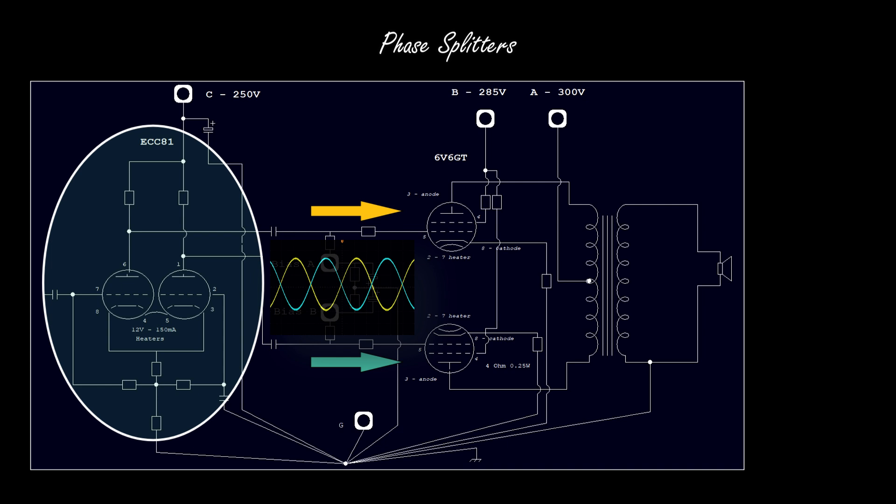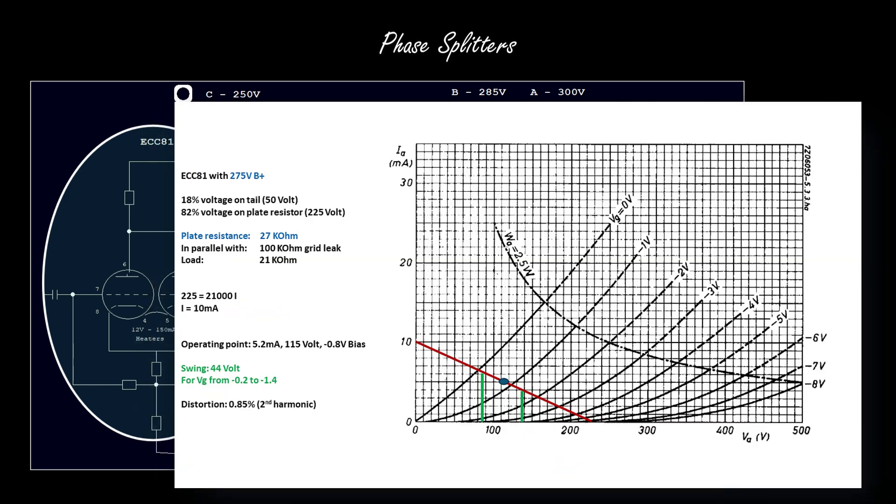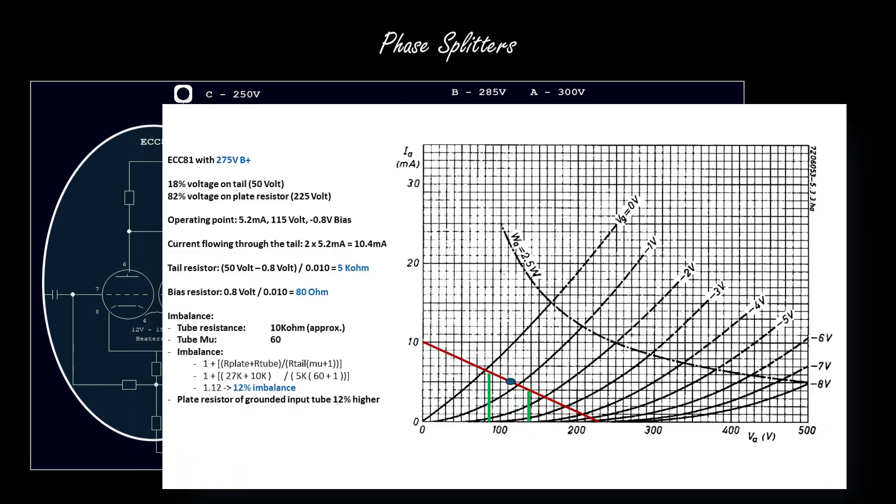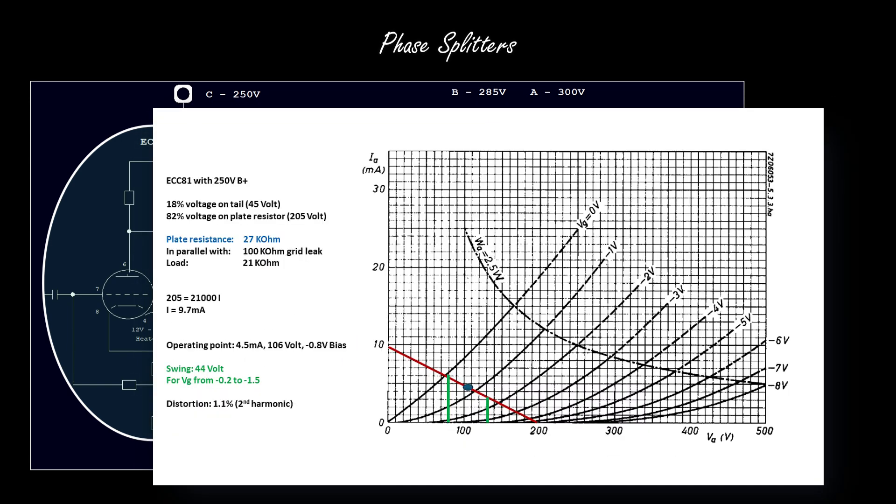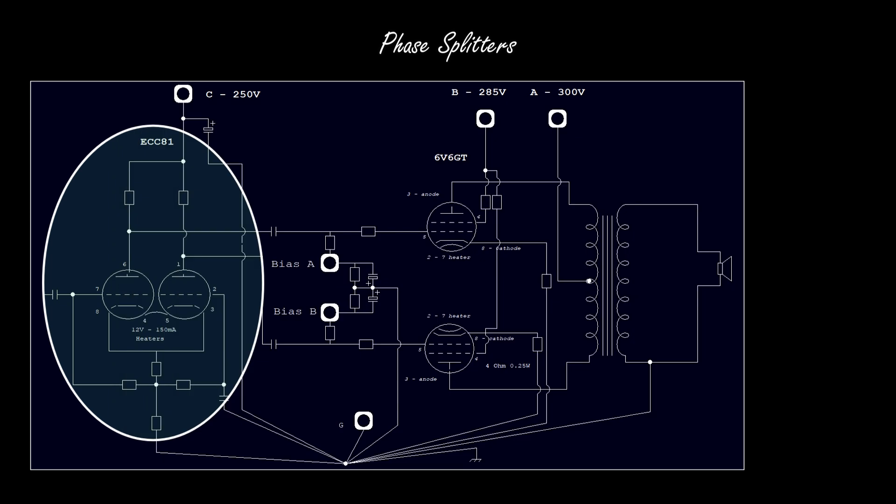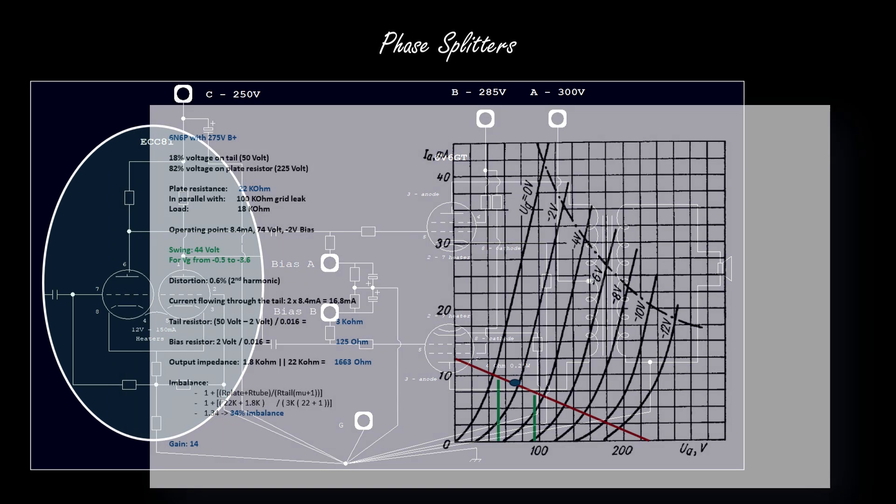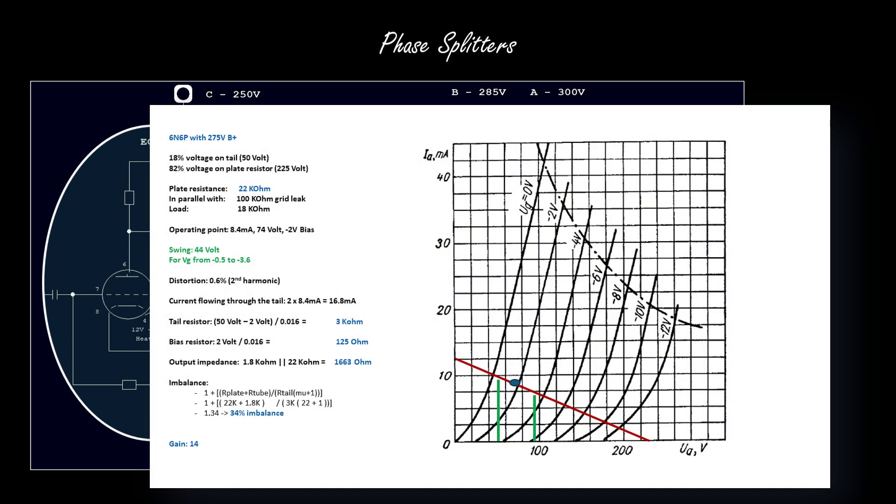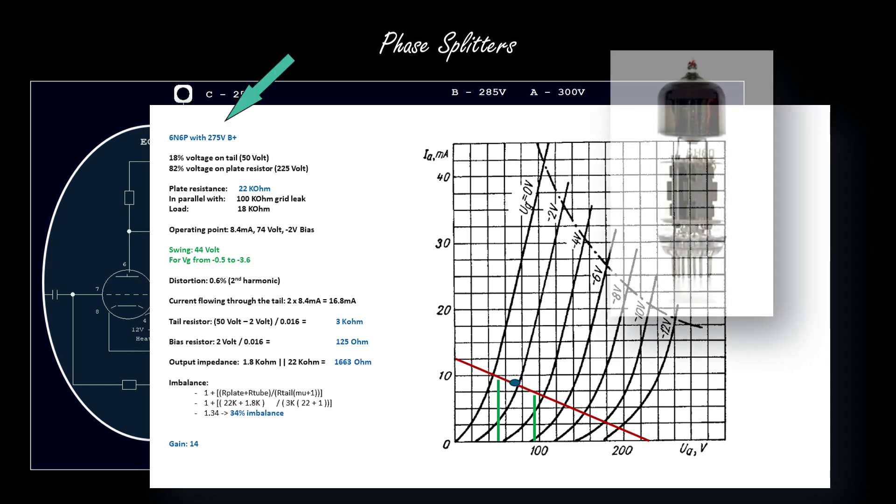The two versions are at opposite phase from each other. We have seen different designs with different tubes for the phase splitter. Let's stick with this version based on the 6NP tube.